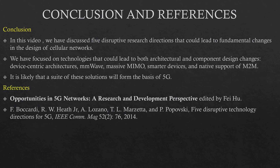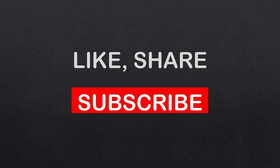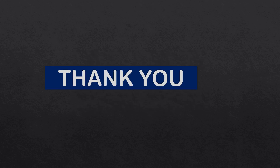In conclusion, in this video we have discussed five disruptive research directions that could lead to fundamental changes in the design of cellular networks. We focused on technologies that could lead to both architectural and component design changes: device-centric architectures, millimeter wave, massive MIMO, smarter devices and native support for M2M communication. It is likely that a suite of these solutions will form the basis of 5G. References include: 'Opportunities in 5G Networks: A Research and Development Perspective' and 'Five Disruptive Technology Directions for 5G' in IEEE Communications Magazine by Boccardi and others. If you like the video, please like, share and subscribe to our channel, Engineering and Technology for You. Thank you.